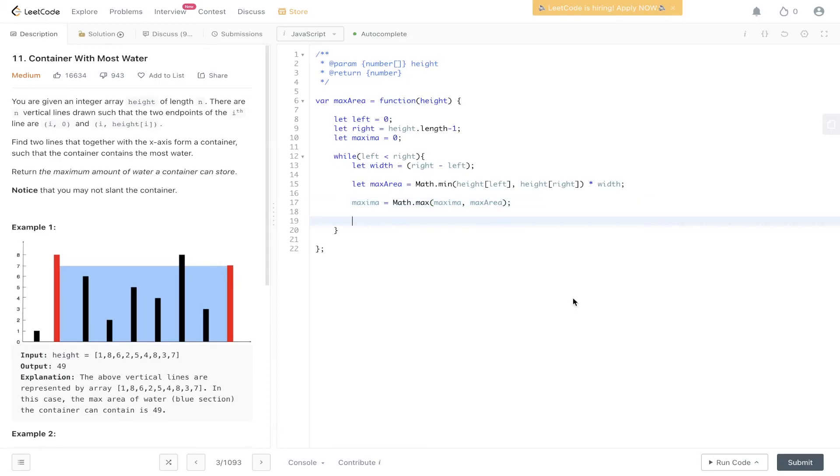Then what we need to do is increment the left or decrement the right based on some constraints. If height at left is less than or equal to height at right, I say less than or equal to just in case both values are the same, then we're going to increment left. Else we can decrement right. Finally we need to return the maximum value which we've worked out.